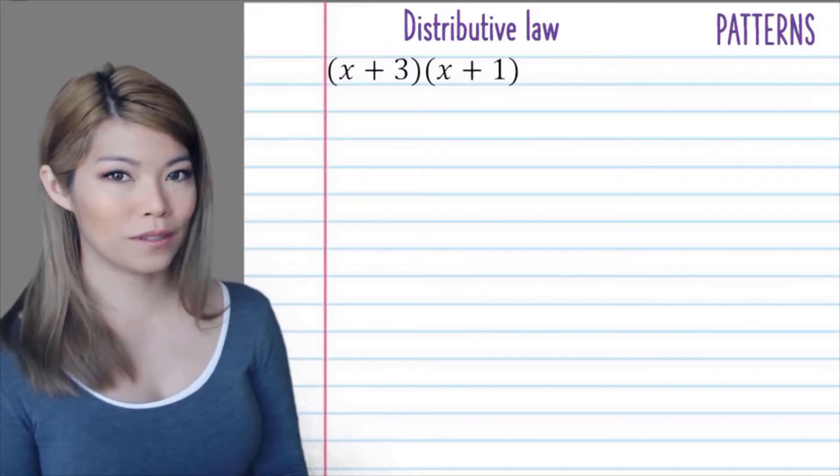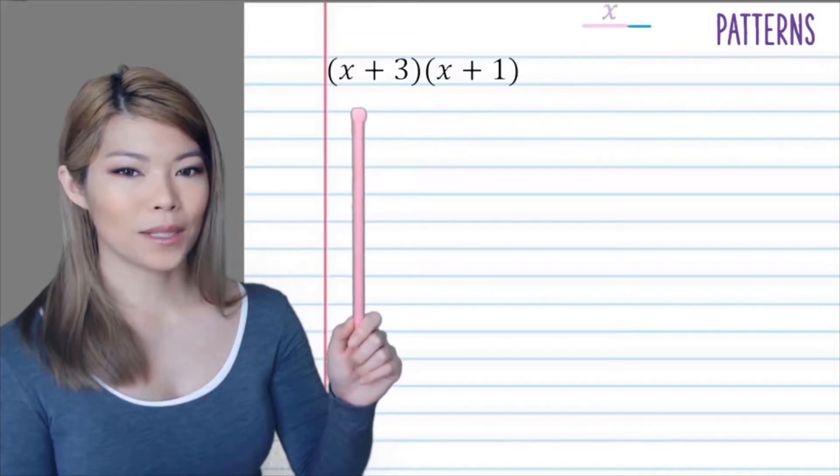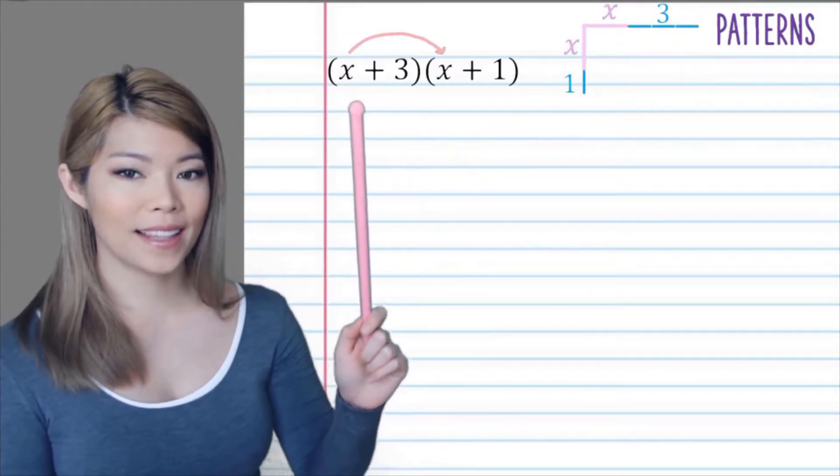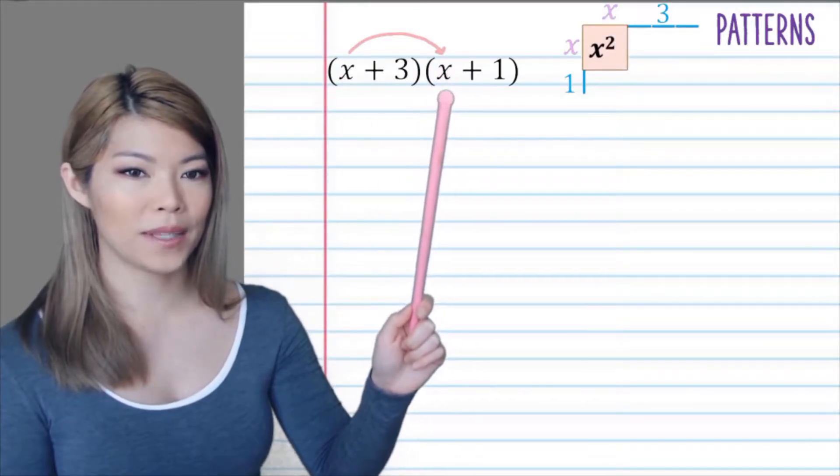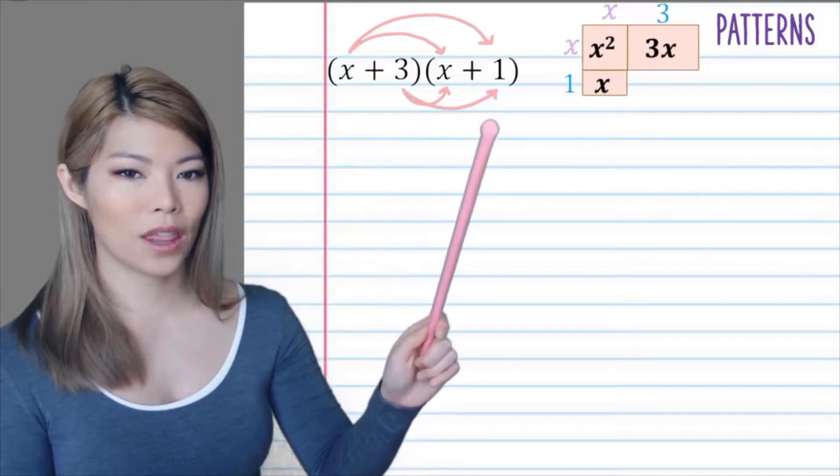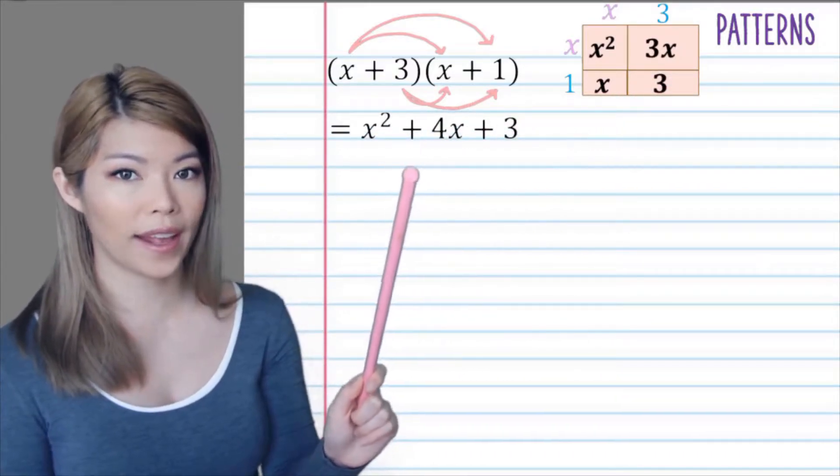We're going to use the distributive law to expand these factors, that is, x plus 3 and x plus 1. When we expand, we multiply x times x to get x squared, then we get x and 3x and 3. When we simplify, we add the x and the 3x to get 4x.